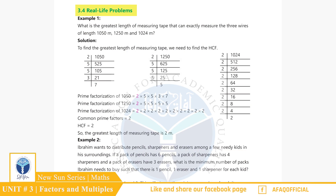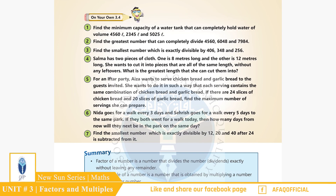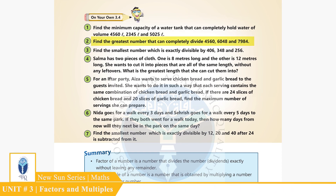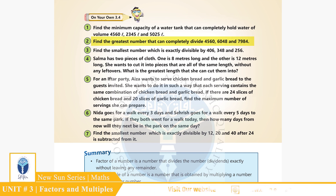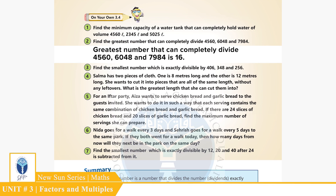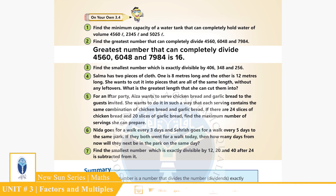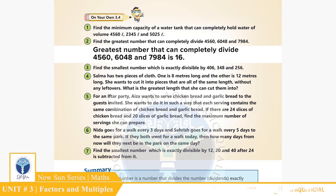اگلا topic ہے Real Life Problems۔ Page 46، Question 2: Find the greatest number that can completely divide 4566, 6048, and 7984۔ بچوں، ہم نے ان تین numbers کا HCF لینا ہے۔ HCF سے ہمارے پاس جواب آیا 16 — یعنی greatest number that can divide 4566, 6048, and 7984 is 16۔